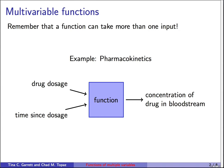Here's an example from pharmacokinetics, which has to do with tracking and studying how drugs are metabolized in the body. You can imagine a function that takes two inputs: the dosage of a drug that a patient has been given, and the amount of time that's passed since that dose was given. The output is the concentration of the drug in the bloodstream at that point.